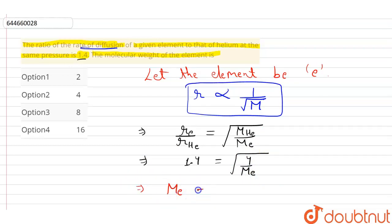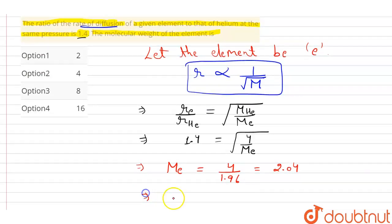So now the molecular weight of the element e is equals to, so if we square both the side it will become 1.96, and molecular weight will become 4 by 1.96, that is equals to 2.04.